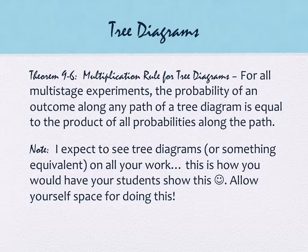The idea that if I do one outcome and then I do another outcome, I multiply those outcomes together. There's a note on this, and this is true for all of the problems we work with. Expect to see tree diagrams or something equivalent on all of your work. This is what you would have your students do. So please allow space to do that. You probably want to make sure you skip ample space because tree diagrams tend to take up a lot of space.